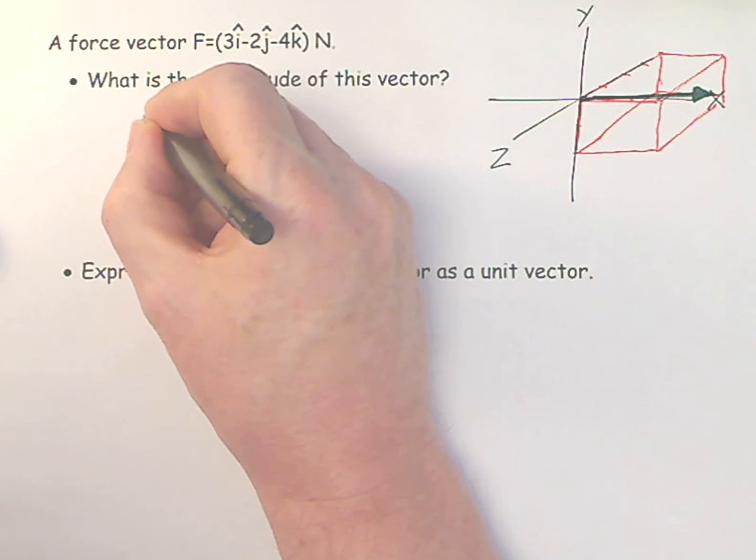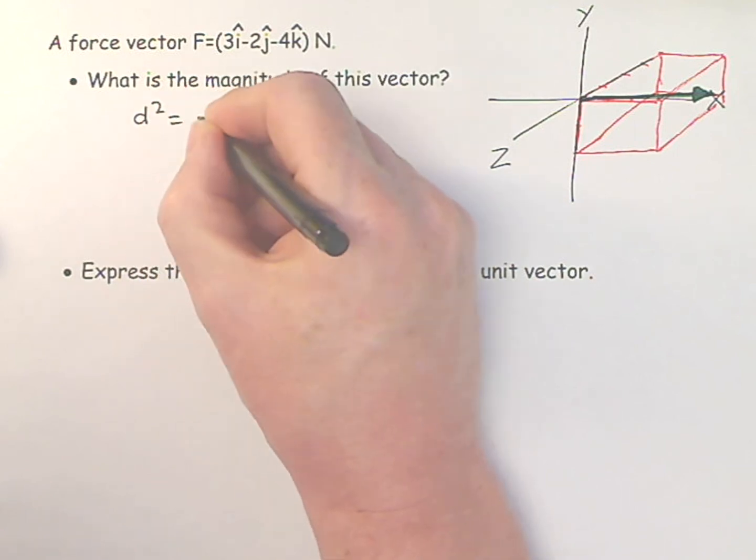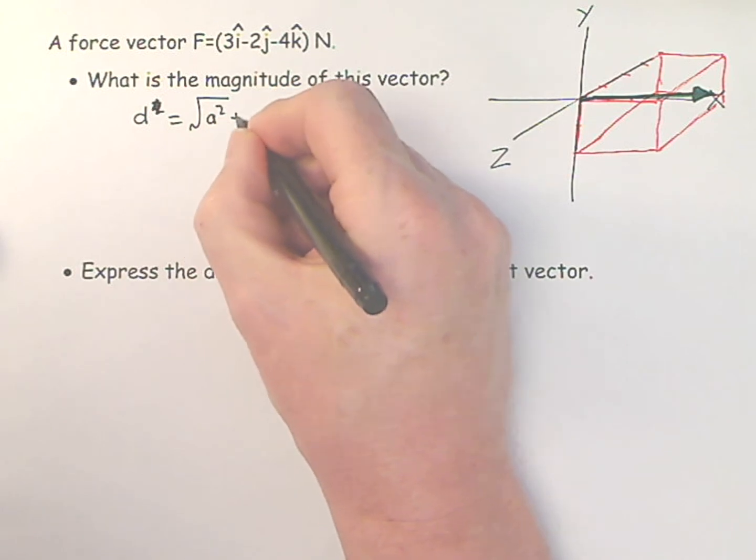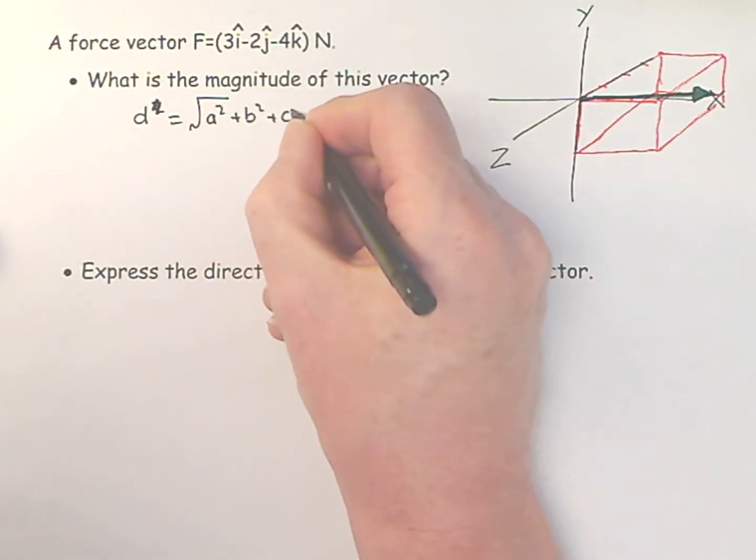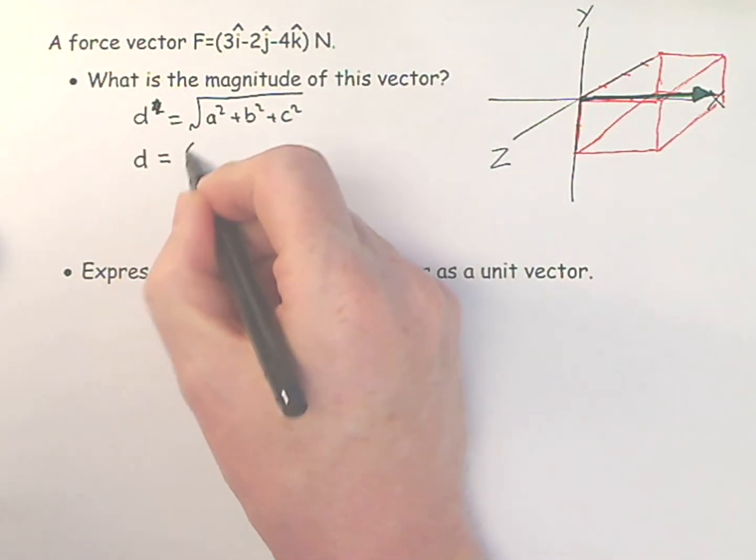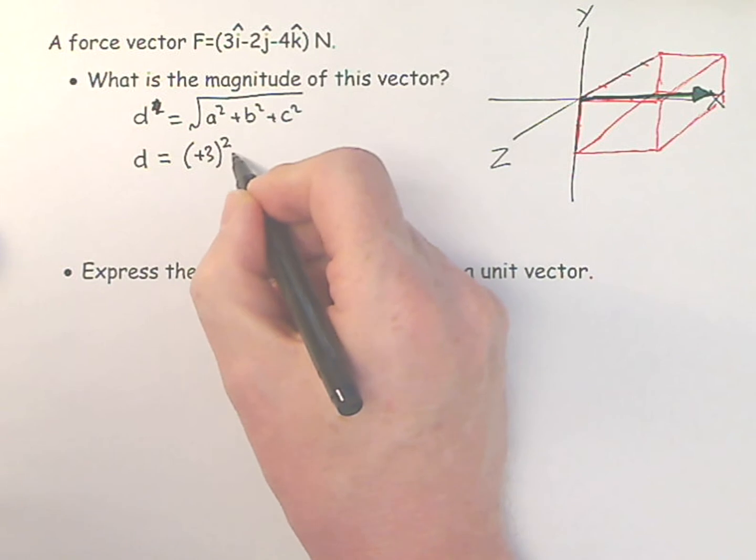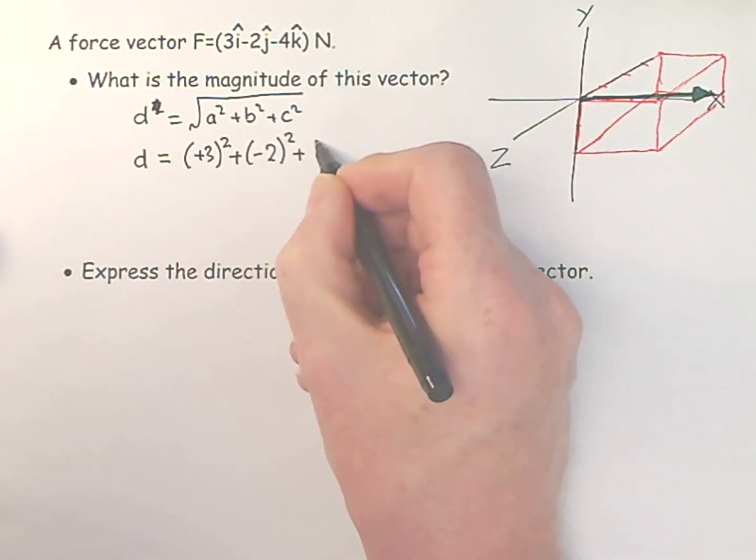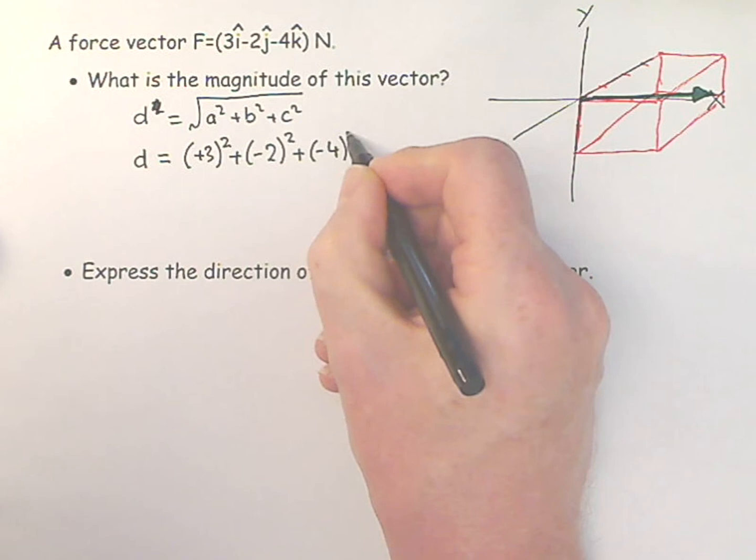We basically can say d squared is equal to the square root of a squared plus b squared plus c squared. It's just the same as Pythagoras, but in three dimensions. So d, in this case, is equal to plus 3 squared plus minus 2 squared plus minus 4 squared.